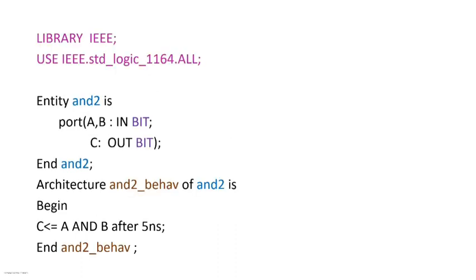Now we are going to write the code for the AND gate behavioral model. The initial two lines are library files: 'library IEEE' and 'use IEEE.std_logic_1164.all'. These two library files are included with all VHDL codes generally. For basic VHDL coding we use these two header files.